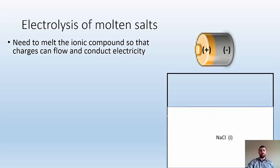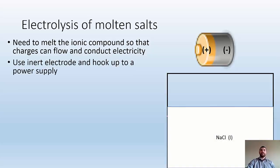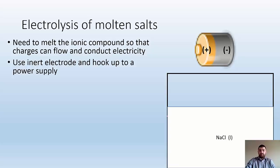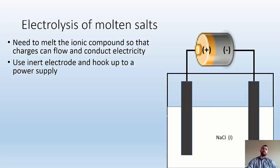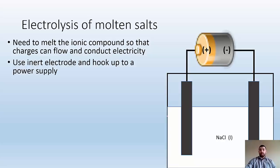So you melt that sodium chloride, you get molten sodium chloride, and then you've got to insert some electrodes. They've got to be inert because you don't want them to react with this stuff — otherwise you get a side reaction destroying your electrode. Usually they use graphite or carbon, essentially. And you hook it up to a power supply.